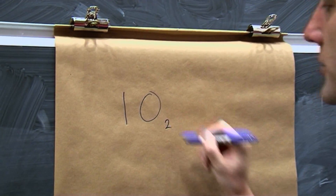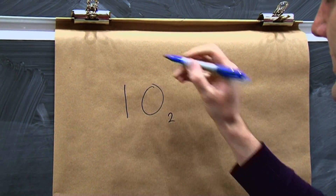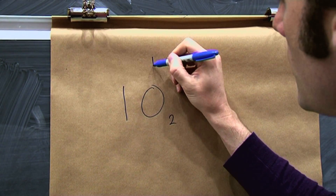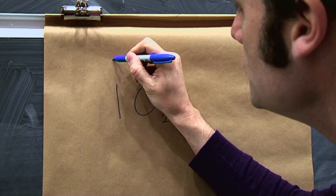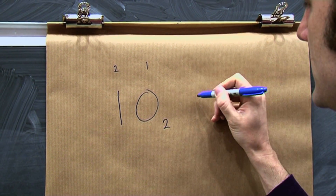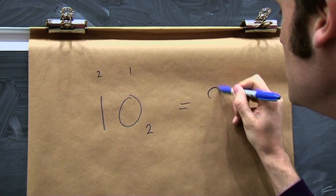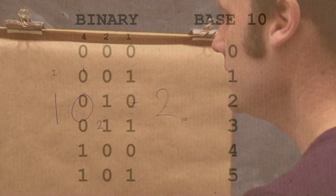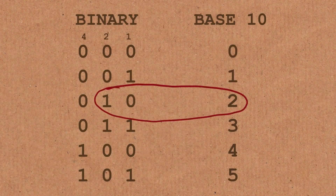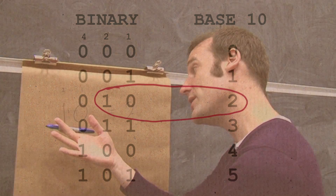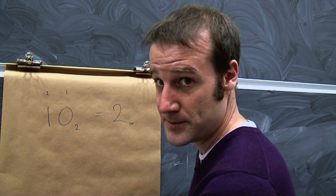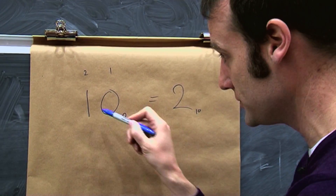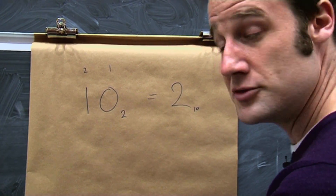However, if this is in binary, then this is our units column, that's our twos column, and so this actually equals 2 in base 10. So you expect it to be 10, but it's not — it's 2, and that's the joke. There are actually two types of people: those who knew this was binary and those who didn't.